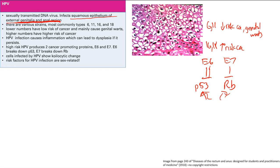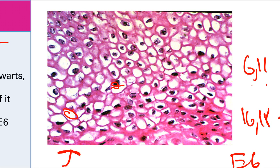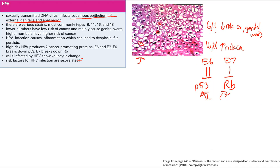HPV infections cause inflammation, leading to dysplasia and eventually cancer. All cells infected by HPV — regardless of subtype — show koilocytic change: clearing of the cytoplasm with large white areas and a shrunken, raisin-like nucleus. Risk factors for HPV are all sex-related: multiple sex partners and early age of first intercourse.